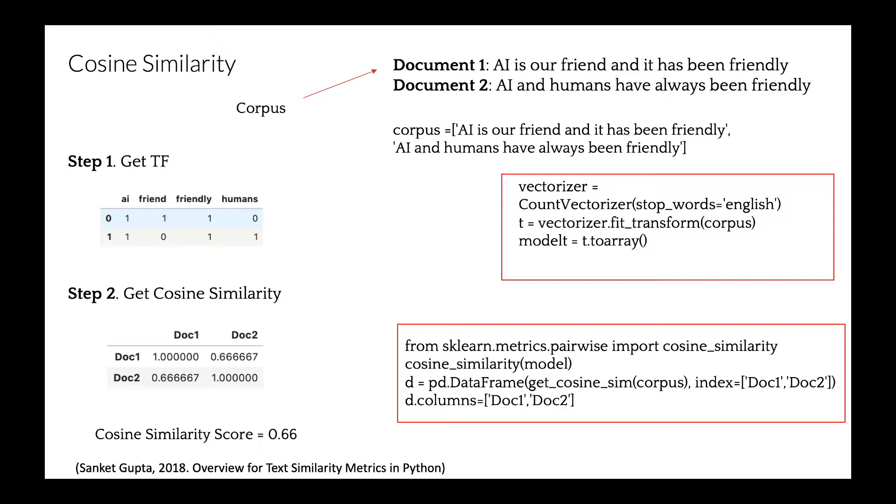Here's our corpus with two documents. First, we will apply tf. We'll use count vectorizer with parameter stop words. In step two, we obtain scores by applying cosine similarity function to our vectorized corpus. And you notice cosine similarity score here is 0.66, showing that the documents are more or less similar.